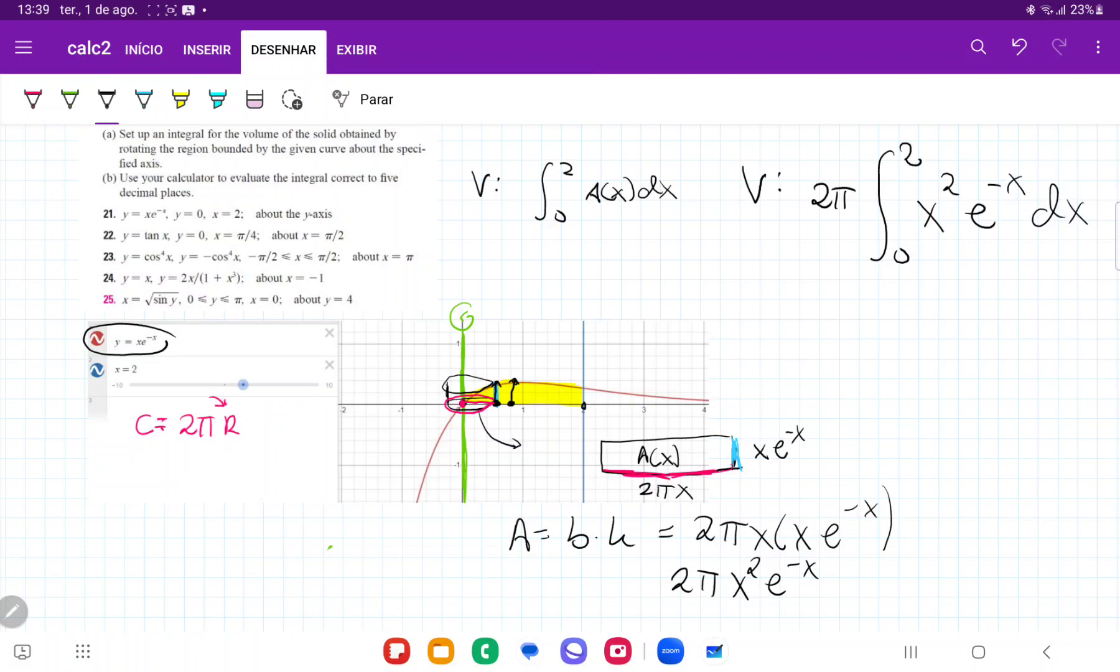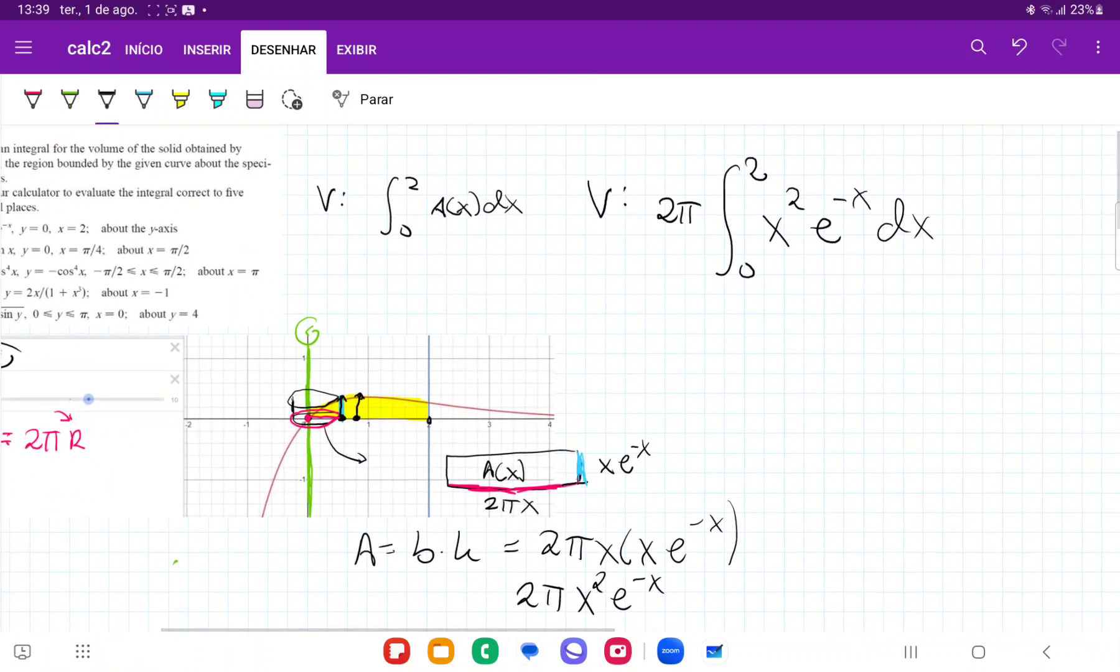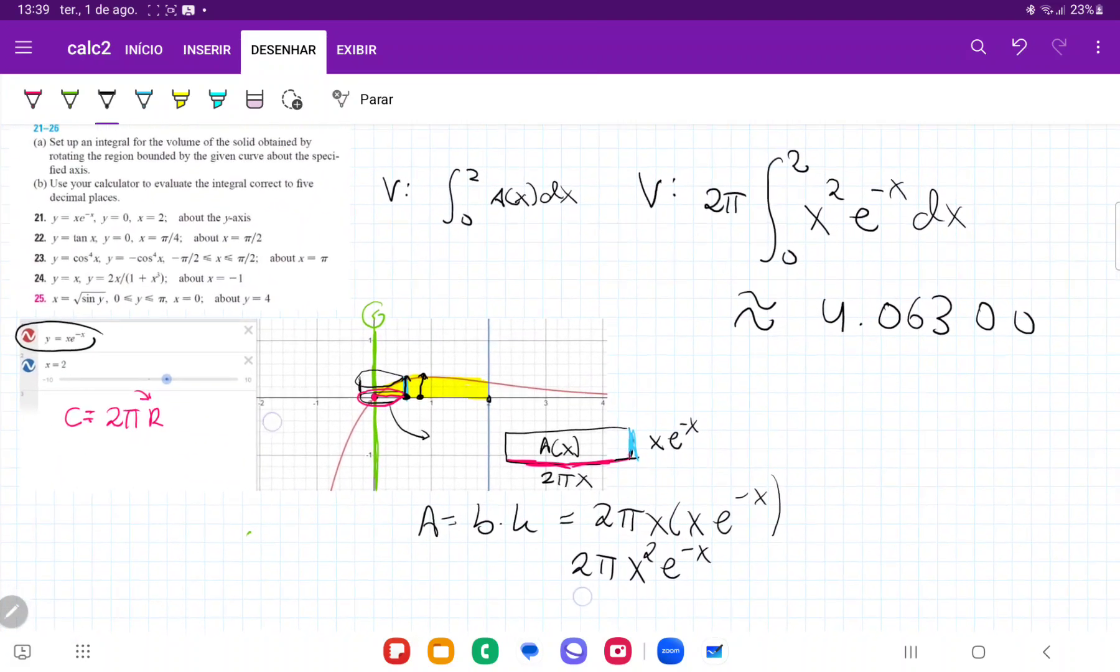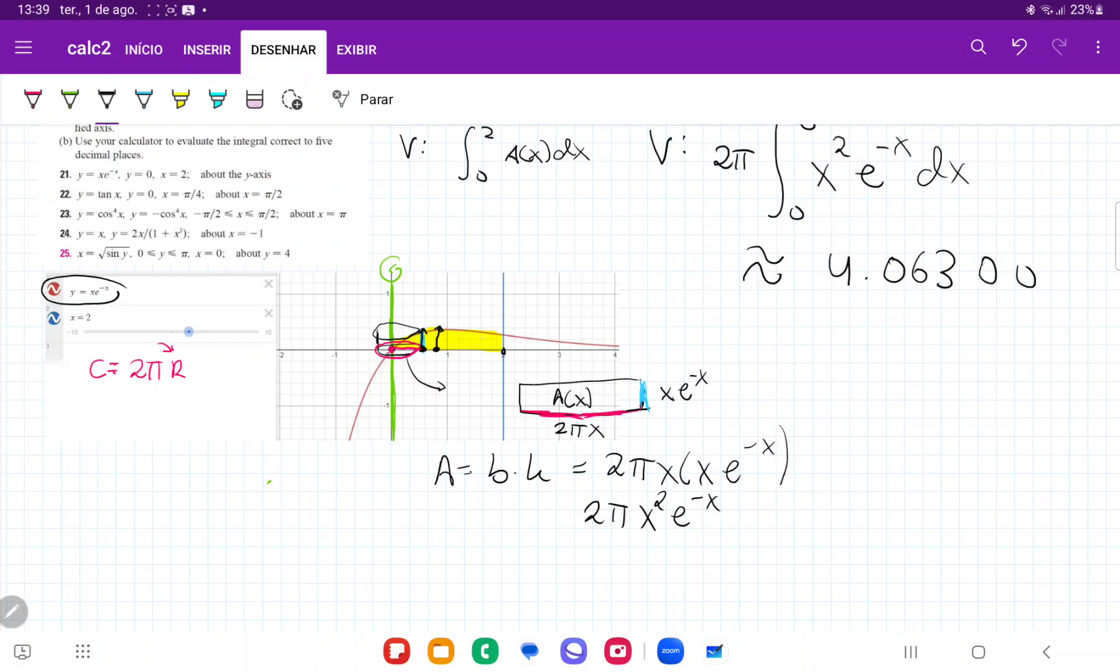And now, they want us to evaluate this integral using a calculator. So, I'm going to plug that into my calculator, I'm using the calculator Symbolab. I like to use it to calculate my definite integrals. So, when I plug this into my calculator, it gives me approximately 4.063. And that's what I get when I take this area and I revolve it around the y-axis.